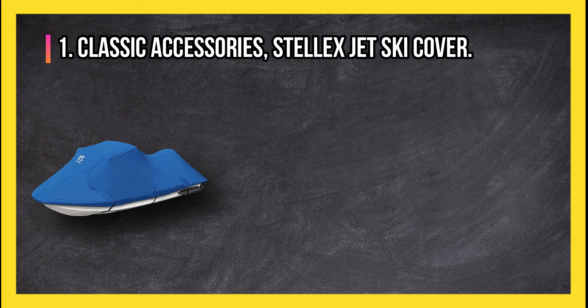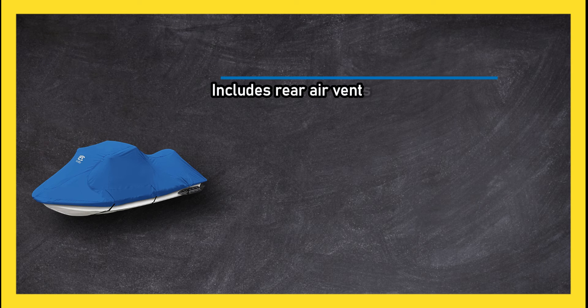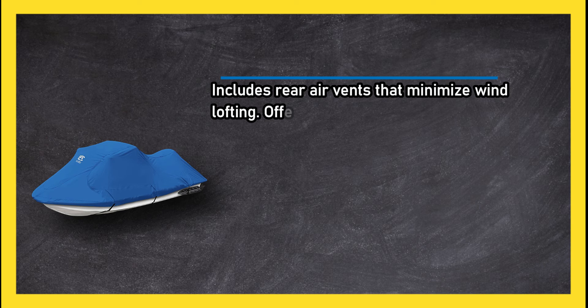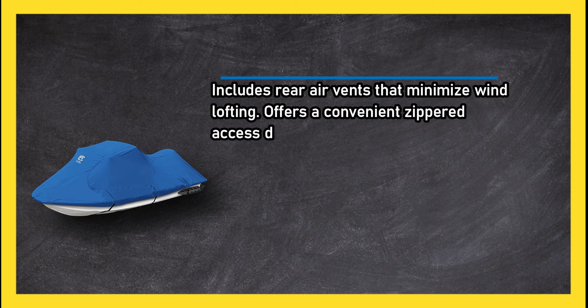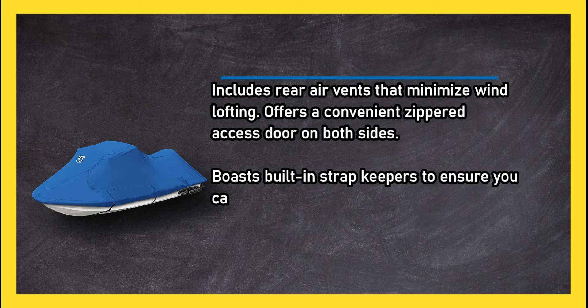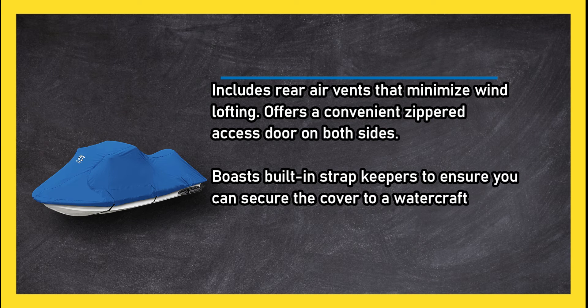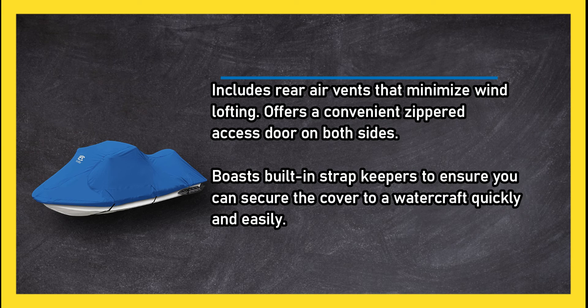At number 1, Classic Accessories Stilex Jet Ski Cover. Includes rear air vents that minimize wind lofting. Offers a convenient zippered access door on both sides. Boasts built-in strap keepers to ensure you can secure a cover to a watercraft quickly and easily.